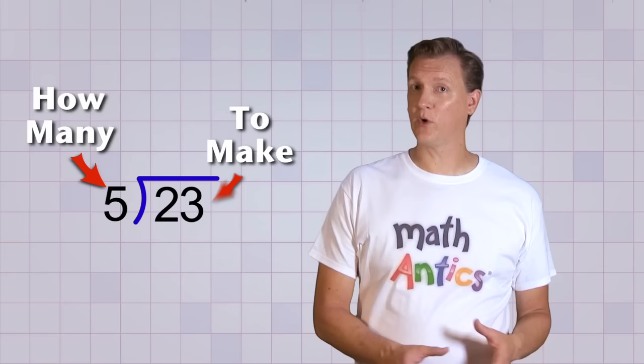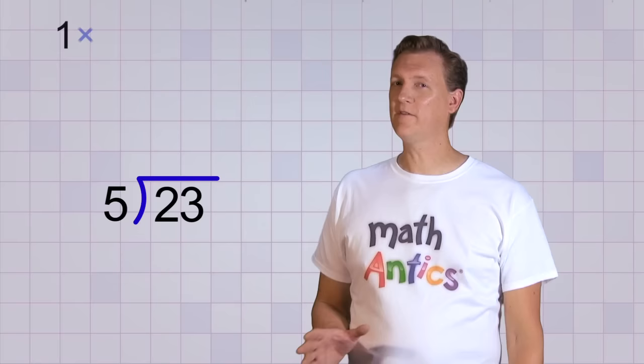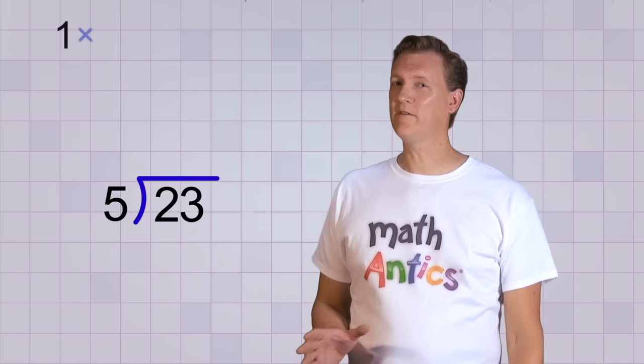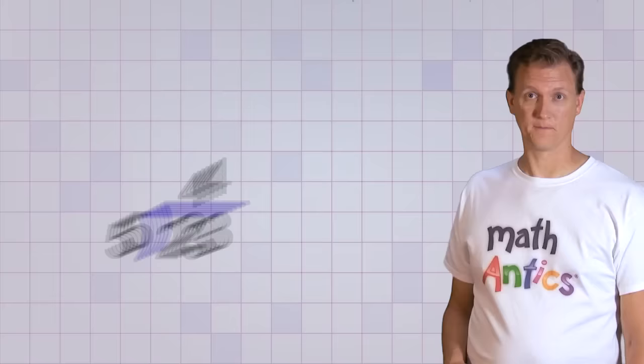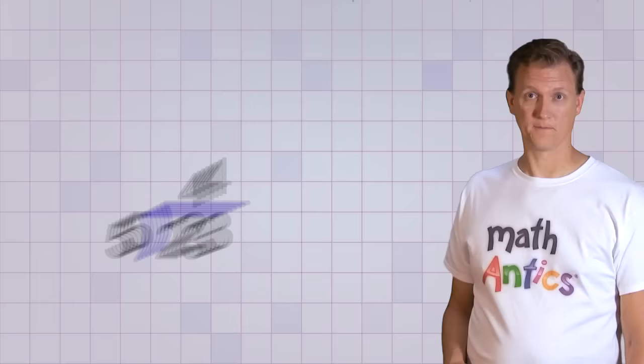Okay, so now we ask, how many 5s will it take to make 23 or almost 23? Well, 1 five would be way too small. 2 fives is 10. That's also too small. 3 fives would be 15. 4 fives is 20. Oh, that sounds promising. Now 5 fives is 25, and that would be too much. So it sounds like 4 is a really good number to pick for our answer. So let's put that on the answer line.